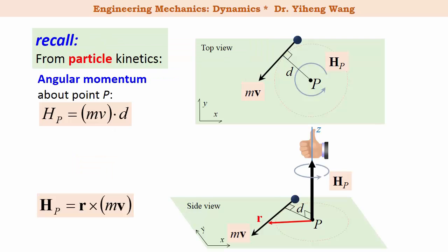Also from particle kinetics, the angular momentum of a particle about a specified axis is calculated as simply the moment of its linear momentum about the set axis. For 2D planar motion, the angular momentum can be considered about a point instead of an axis, and is calculated as linear momentum multiplied by the moment arm to the point.